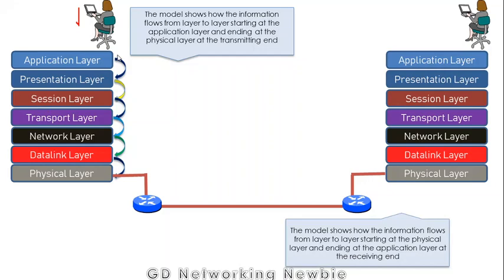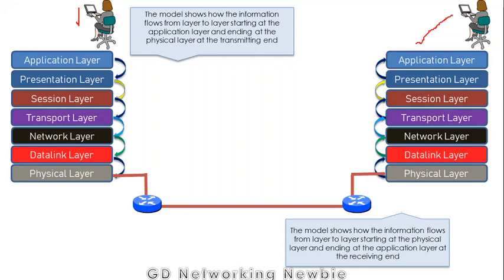The same process happens at the receiving end — information flows from the physical layer back up to the application layer. When data arrives at the destination's physical layer, it is handed to the data link layer, then the network layer, transport, session, presentation, and finally the application layer, which presents the information so the user can visualize it.